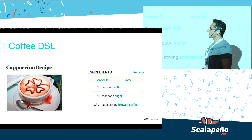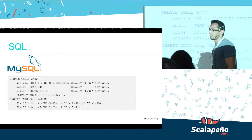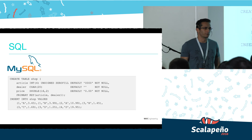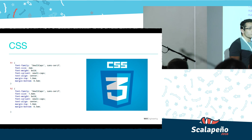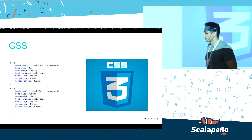Another well-known DSL is MySQL. MySQL is a data query and manipulation tool — we all use it when we need to solve problems in the area of data. Another one is CSS. CSS is a DSL as well because it offers you the ability to decide how web components look and behave.